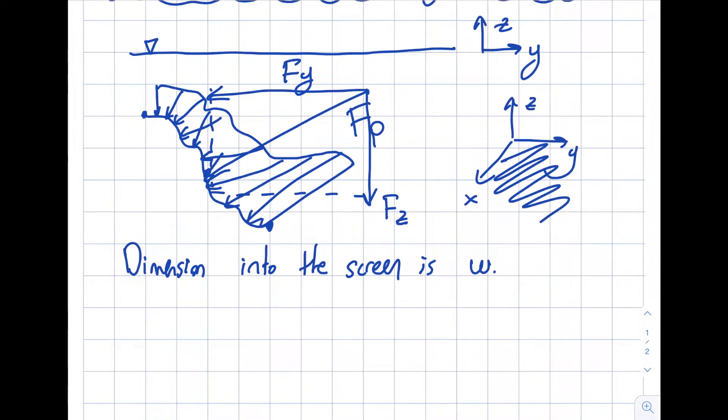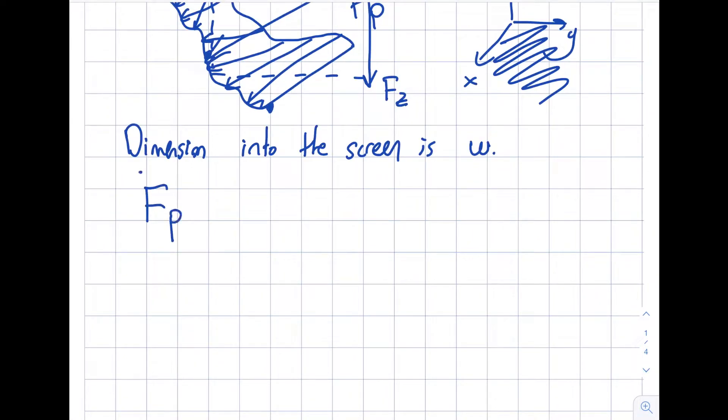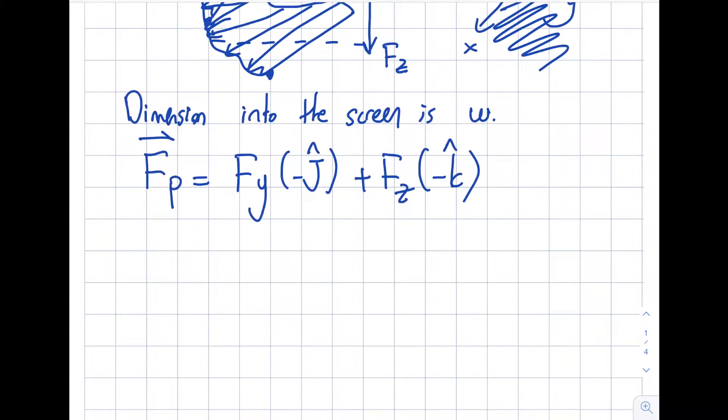Z is pointing up yet FZ is pointing down, so the combined force will be FP equals FY in the negative J direction plus FZ in the negative K direction. Reminder: I is the unit vector in the X, J is the unit vector in the Y, and K is unit vector in the Z directions.